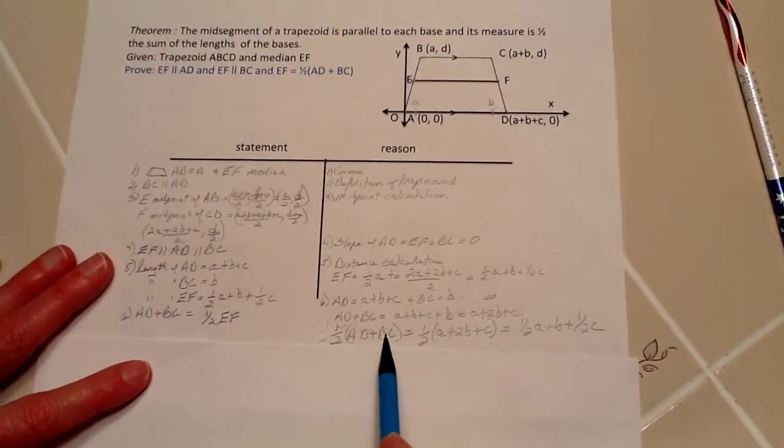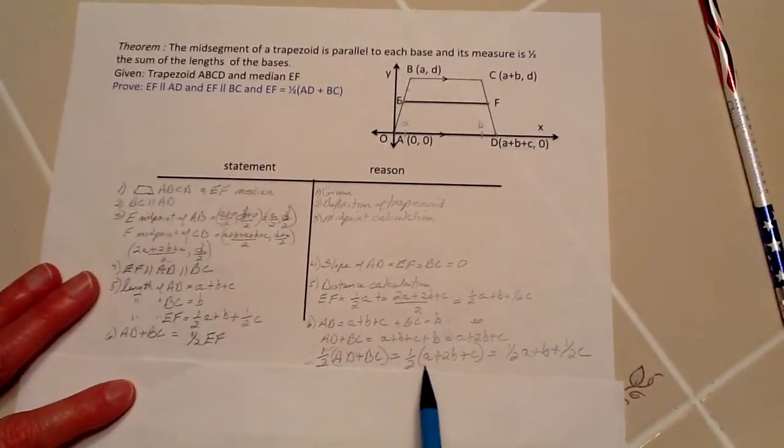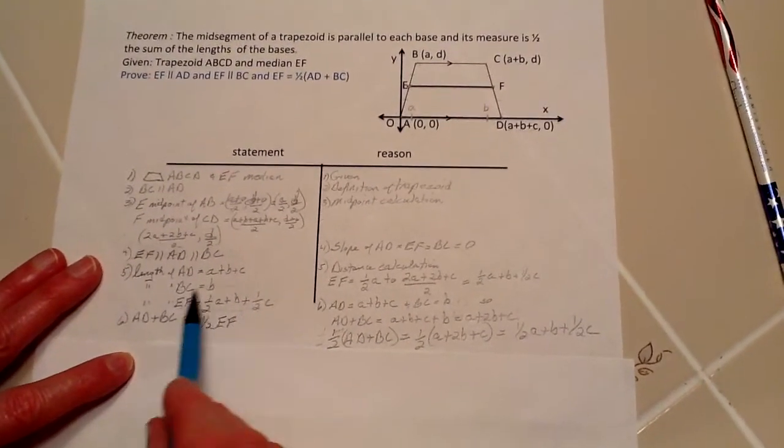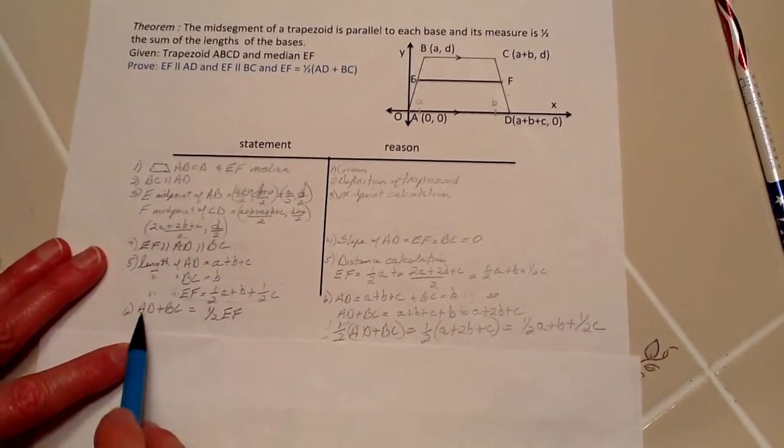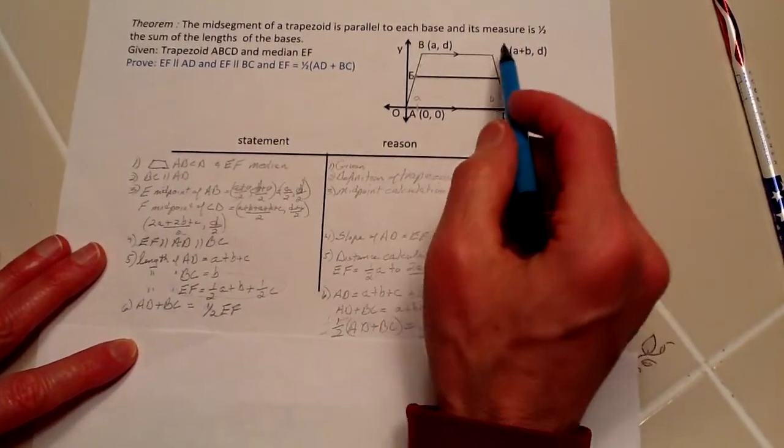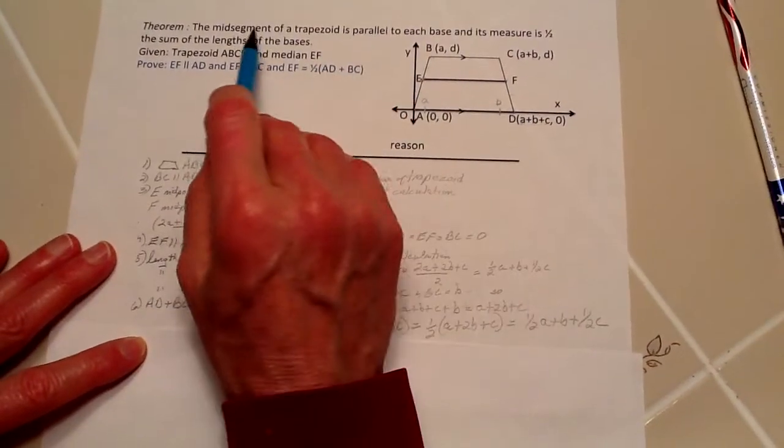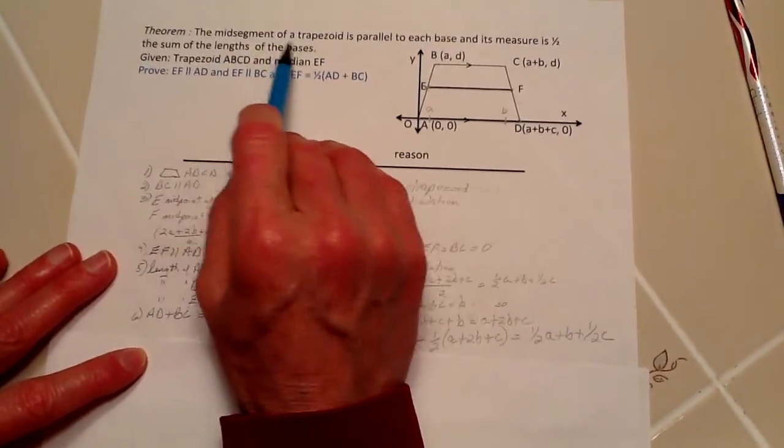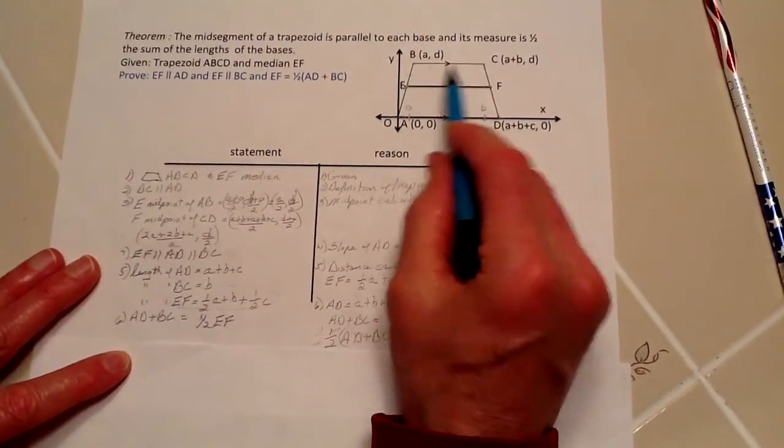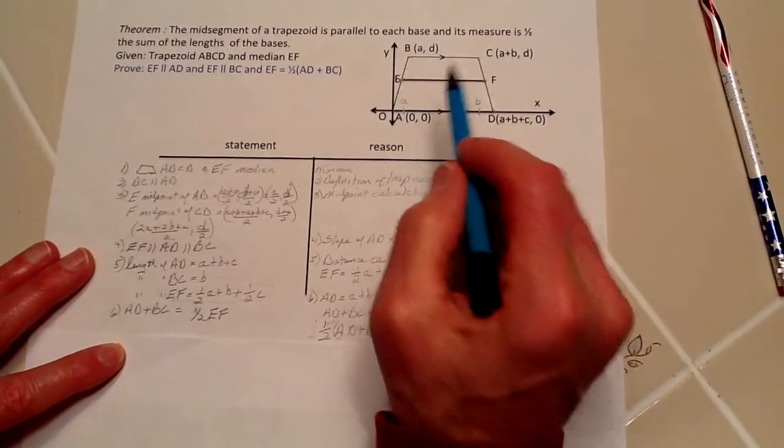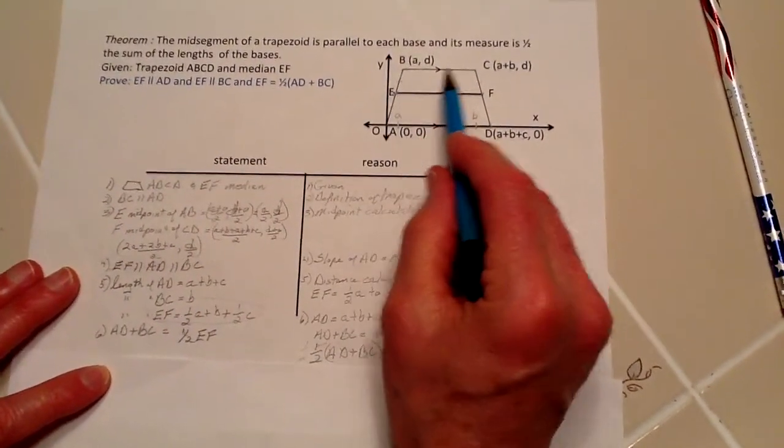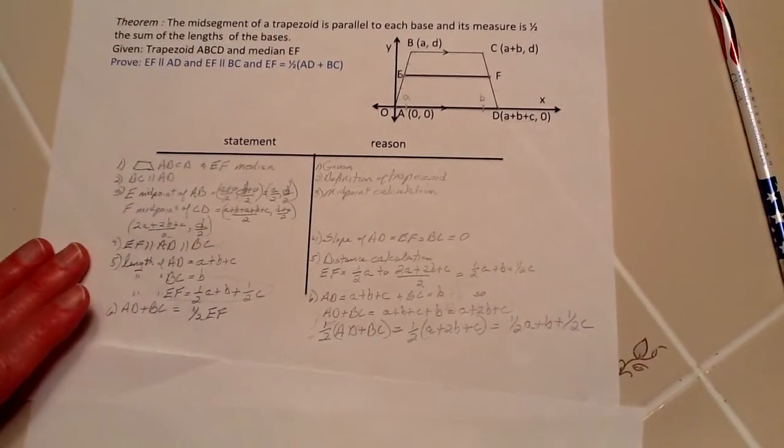If I add these two together and take one-half of that, I end up with this, which is exactly the same as we had here. Therefore we have proved that AD plus BC equals one-half EF, which means we have proven that the mid-segment of the trapezoid is parallel to each base, the top and bottom, and that this measure is one-half the sum of the lengths of these two. Thank you.